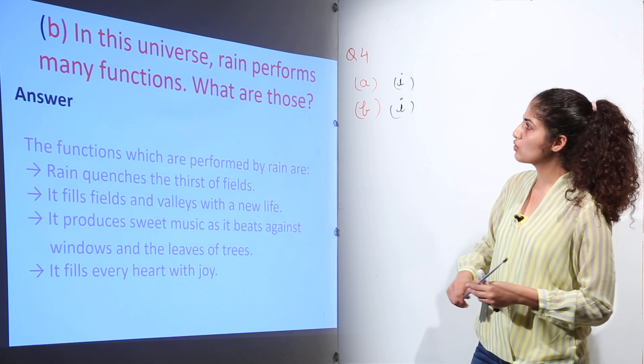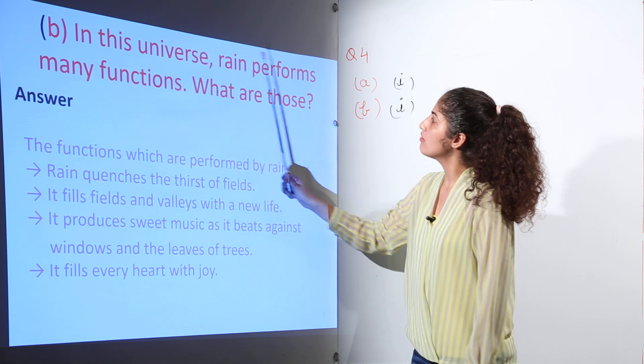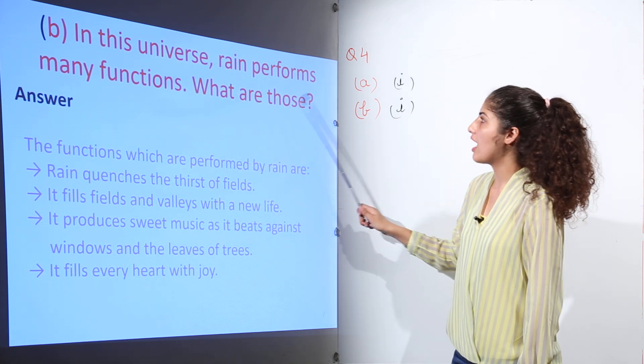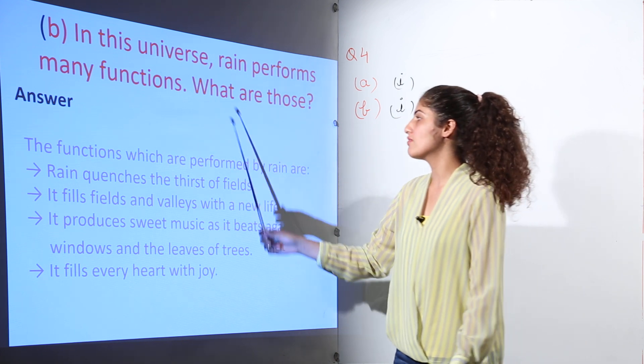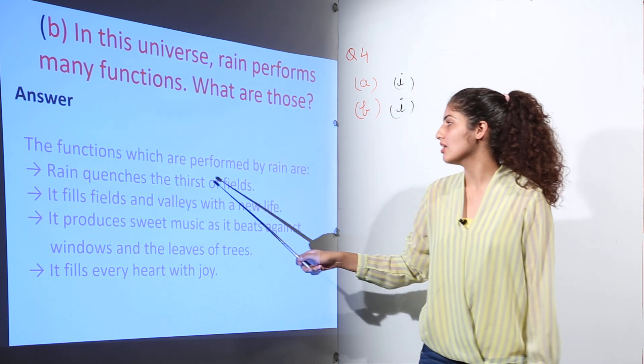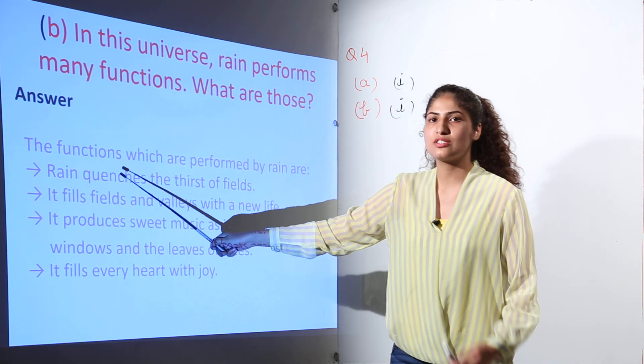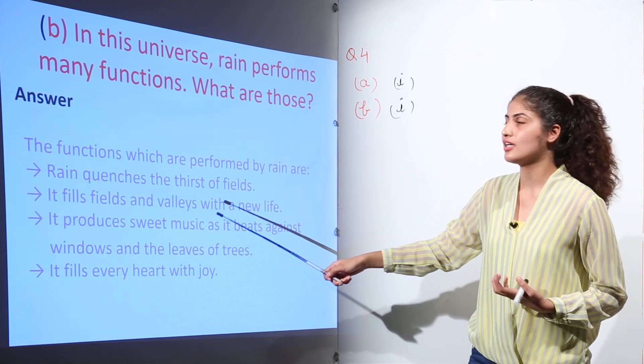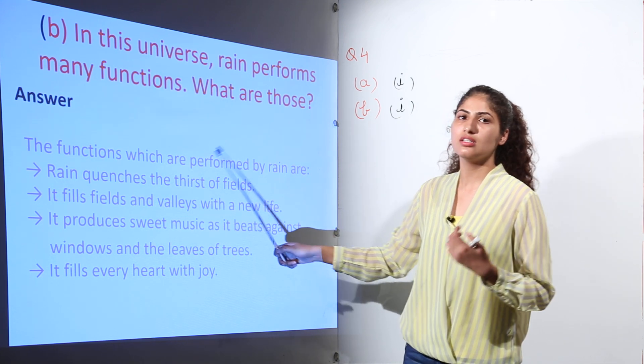Moving on to the next question: In this universe, rain performs many functions. What are those? The various functions are rain quenches the thirst of the fields. Quenches means to satisfy, to satiate. So the rain is satisfying the thirst of the fields. It fills fields and valleys with a new life.